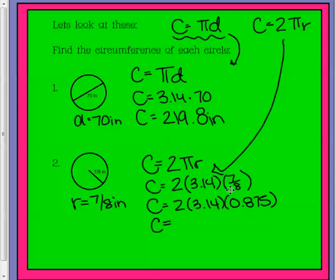7 eighths is also equivalent to 875 thousandths. When I'm working with all decimals, I usually like to change everything to a decimal. I don't like having fractions and decimals in there, but you can skip this step if you would like.